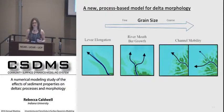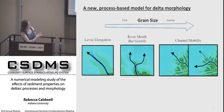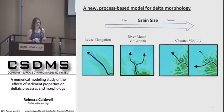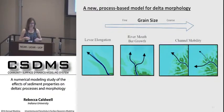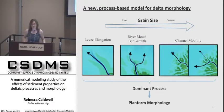In order to explain this morphologic variation, we present a new process-based model for delta morphology. This model is driven by the observation that we see three fundamental processes constructing delta growth, and that the prevalence of each process is set by the dominant grain size. Fine-grain deltas are dominated by channel elongation via levee progradation. As grain size increases, the dominant process shifts to channel bifurcation around mouth bars on intermediate grain deltas. Finally, as grain size increases even further, deltas have a high number of highly mobile channels dominated by the process of channel avulsion.